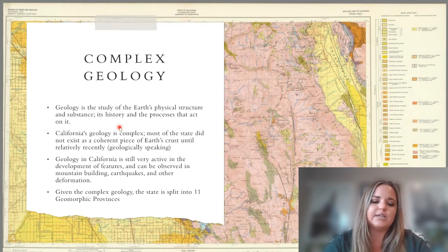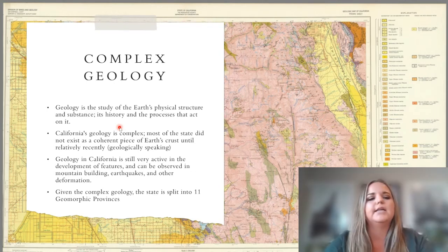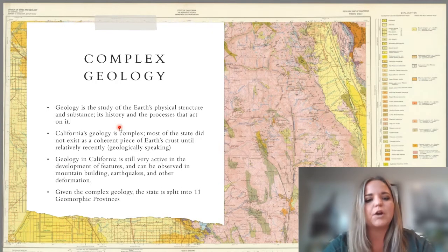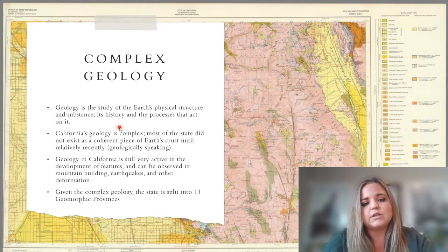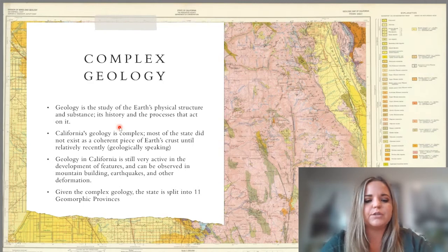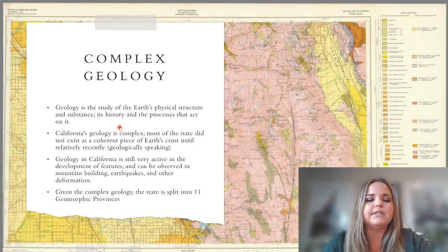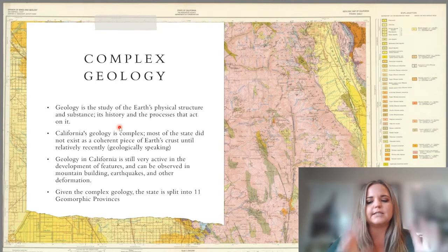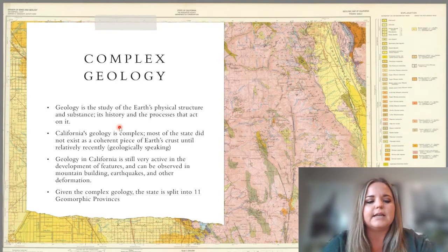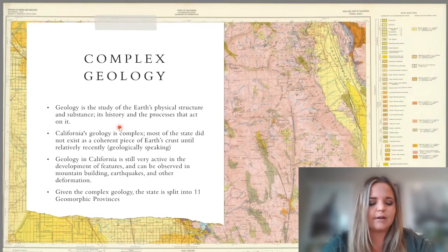The geology not just in the Fresno area, but all of California is very complex, and the history of the processes that produced the geology we see today are quite dense. There are a lot of dynamic processes and almost all of the different geologic occurrences are represented here in California. Because our state is so complex, it has been divided into 11 different geomorphic provinces.